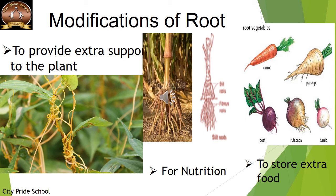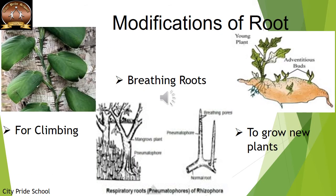Some roots store food — these are tap roots that are storing food. Carrot, radish, beetroot, and turnip all store food, so food storage is also a type of root modification. We also have climbing roots — these belong to a weak-stemmed plant climbing on a coconut tree or some other tree. These climbing roots help the plant to cling to the support.